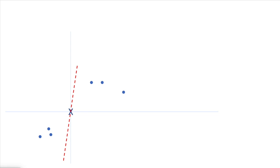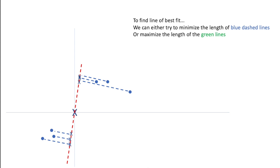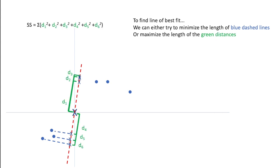Finally, we plot a line of best fit for this data. To find the line of best fit, we can either try to minimize the length of the blue dashed lines — which represent the distance between each data point and its projected point on the line — or we can maximize the distance of the green lines, which would be the distance between the projected data point and the origin. This method is called sum of squares because we square each of the distances. We square the distances because we will have positive and negative distances and we don't want these values to cancel each other out.